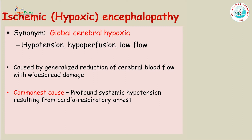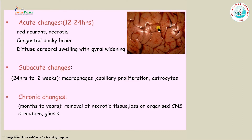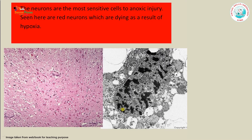In global ischemia, the most common cause is profound systemic hypotension resulting from cardiorespiratory arrest. On gross examination, the brain appears swollen and congested. Microscopically, changes occur in three stages: in the acute stage you see red neurons, neuronal loss, and a congested dusky brain. In subacute changes, around 10 days to 2 weeks, there is macrophage proliferation, capillary proliferation, and astrocytic proliferation. After months to years, there is removal of necrotic tissue, loss of organized CNS structures, and extensive gliosis.